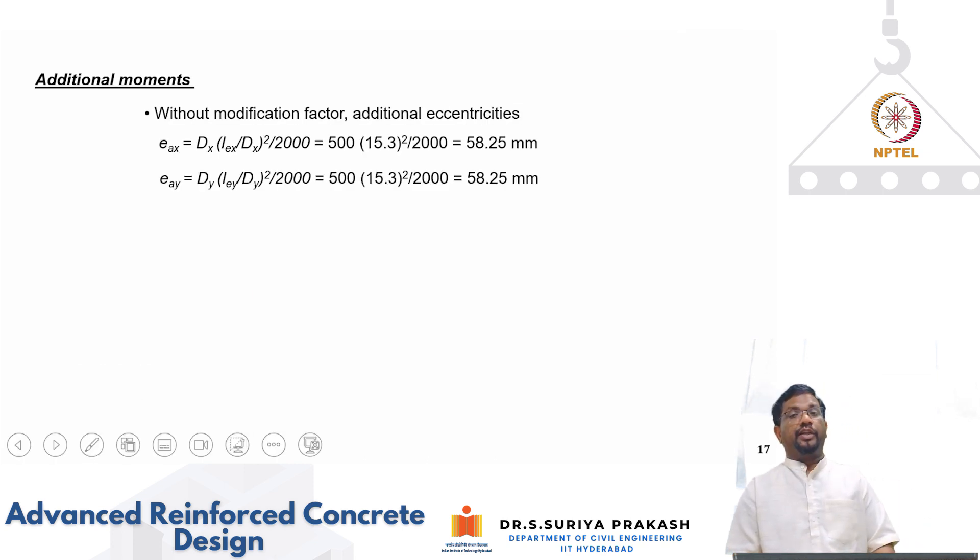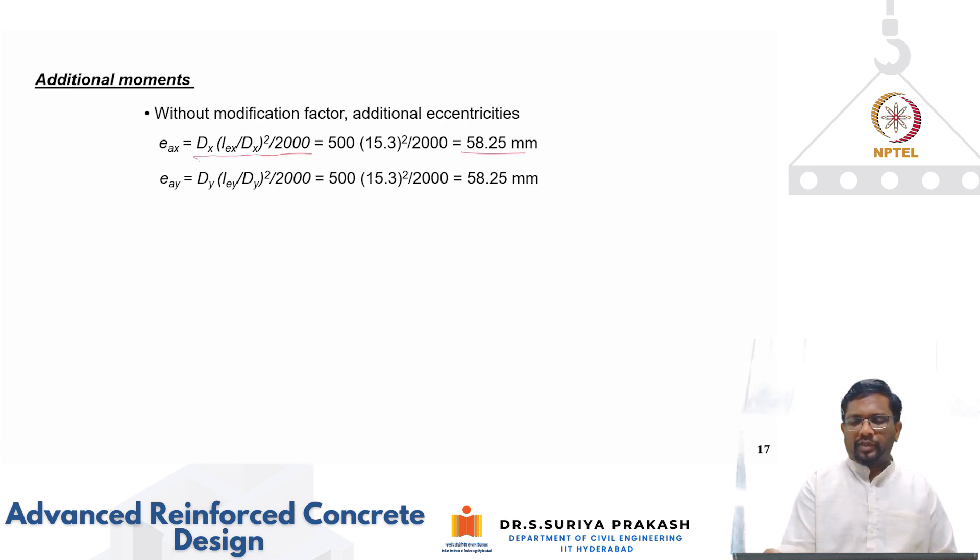So let us go ahead and calculate now additional bending moments. Simplified formula we have discussed that. E_a is nothing but d times le by d whole square divided by 2000. So you get 58.25. You see the additional eccentricity is much larger than your applied eccentricity. That is the premises with which we calculated the curvature also for balance condition.